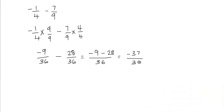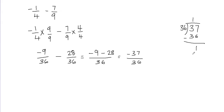This is an improper fraction — we cannot leave our answer in this form. So we're going to use the long division method to convert it into a mixed fraction. Whenever your numerator is greater than your denominator, you need to convert to a mixed fraction. Forget the negative sign for a bit and divide 37 by 36. 36 goes into 37 one time, giving 36, and subtracting leaves a remainder of 1. Remember to put the negative sign back in front of our answer.